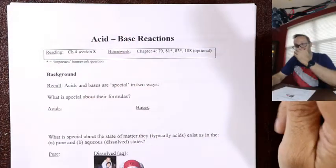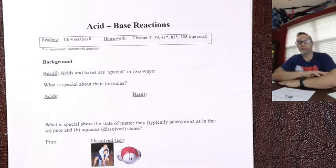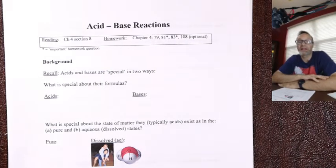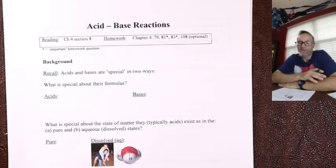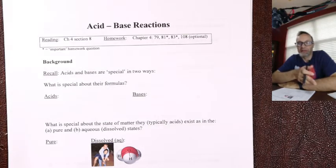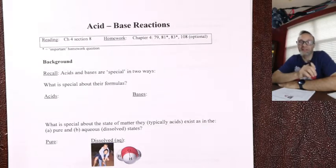Now we're going to look at the next packet: acid-base reactions. The good news is that because you did that titration and we've talked about ionic compounds, acid-base reactions are typically double replacements featuring an acid and a base. Acids and bases when dissolved are ionic compounds, although acids have a weird naming thing — pure state molecular, dissolved state ionic. Bases are always ionic, but acids have this dual personality.